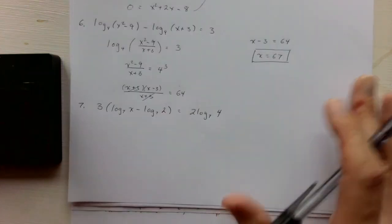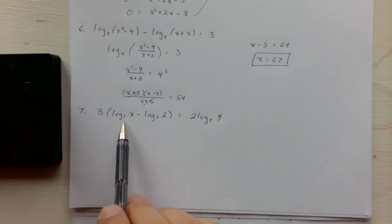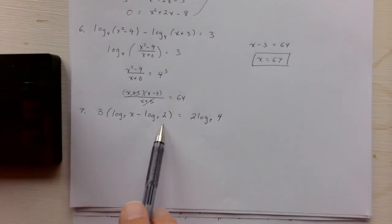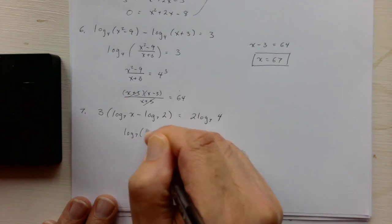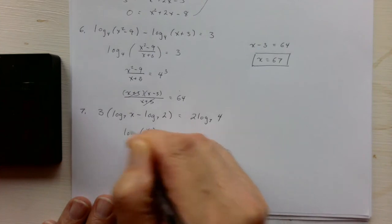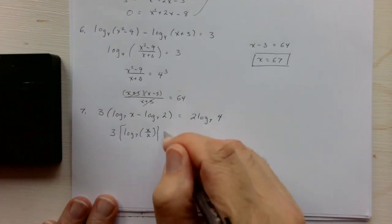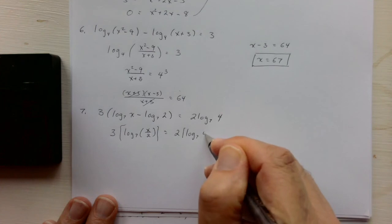And then for example 7, also coincidentally the base is also 7. We'll worry about this 3 in a minute. Here we have the difference of two logs. So this is the log base 7 of x divided by 2. Now that's multiplied by 3 equals 2 times log base 7 of 4.